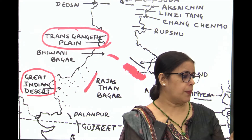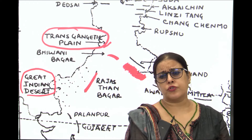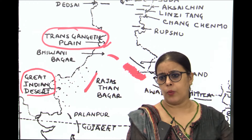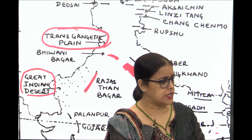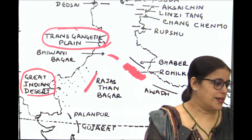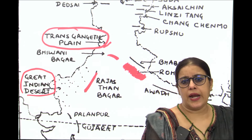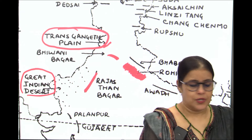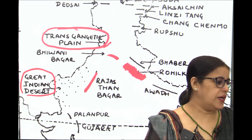Punjab plains — that includes Bist, Bari, and Malwa plains. Have you located them in your regional map? Bist, Bari, and Malwa plains — done. Come back to the map of India.